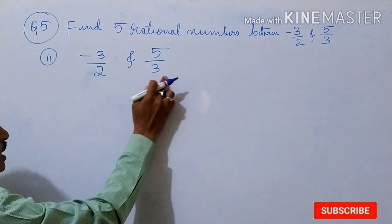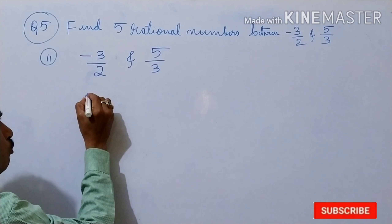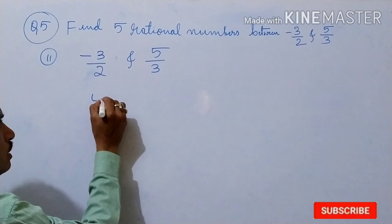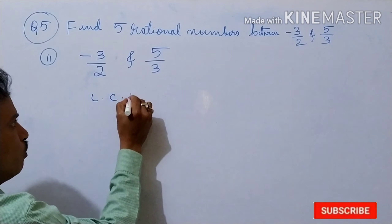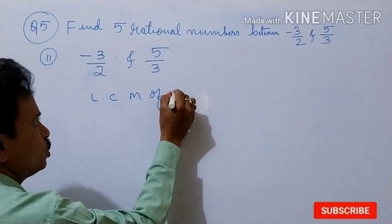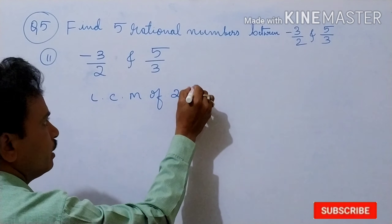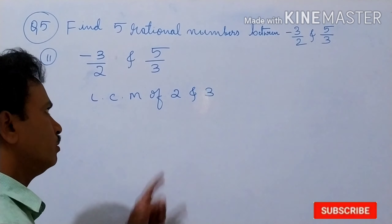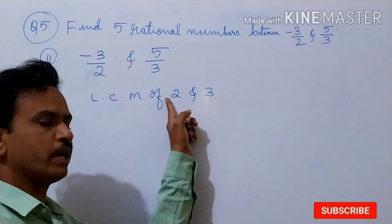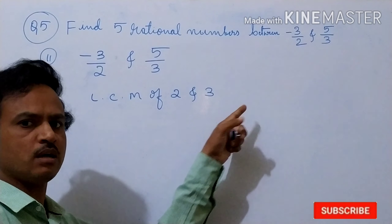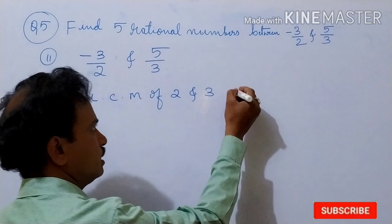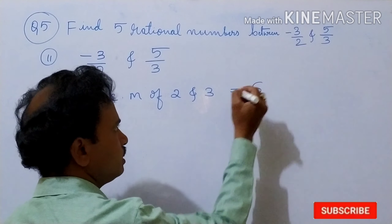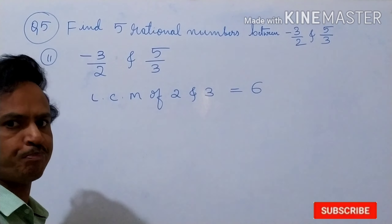Now what is the LCM of 2 and 3? LCM of 2 and 3 — just multiply: 2 times 3 is 6. So LCM is 6.